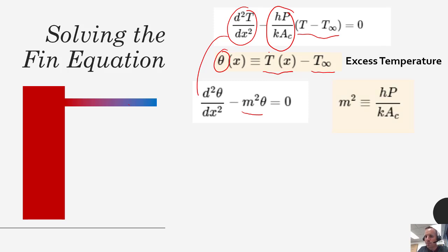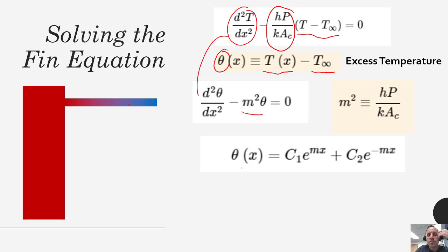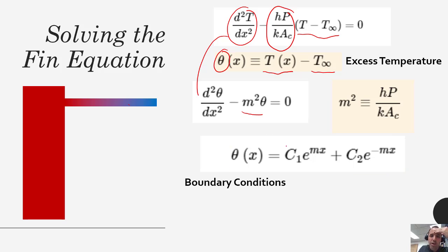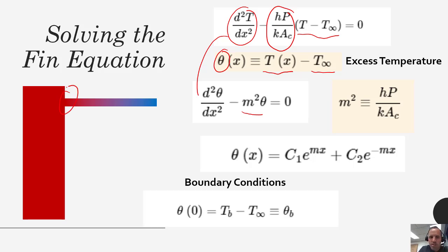We subtract off the excess temperature term and lump all those parameters into a variable called m squared, where m squared is defined as H P divided by (K A_c). There's a method to calling it m squared rather than just m. Skipping the integration, the general solution to this homogeneous differential equation has the standard exponential form and we're going to need to apply boundary conditions. For a second order differential equation we need two boundary conditions. At the base, theta at X equals zero equals the base temperature minus T_infinity — this is a constant surface temperature boundary condition.